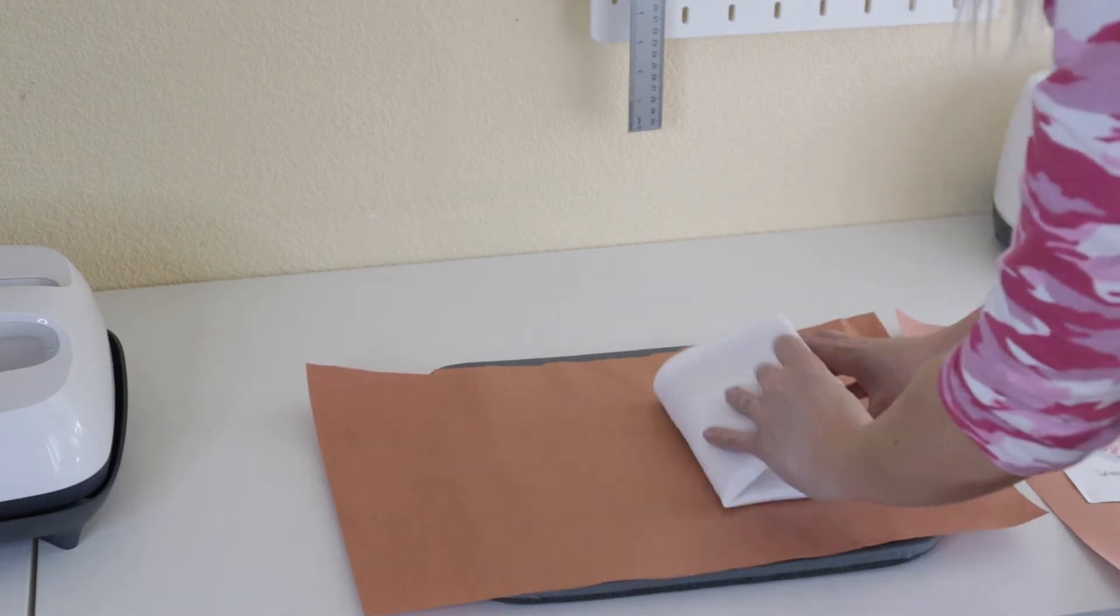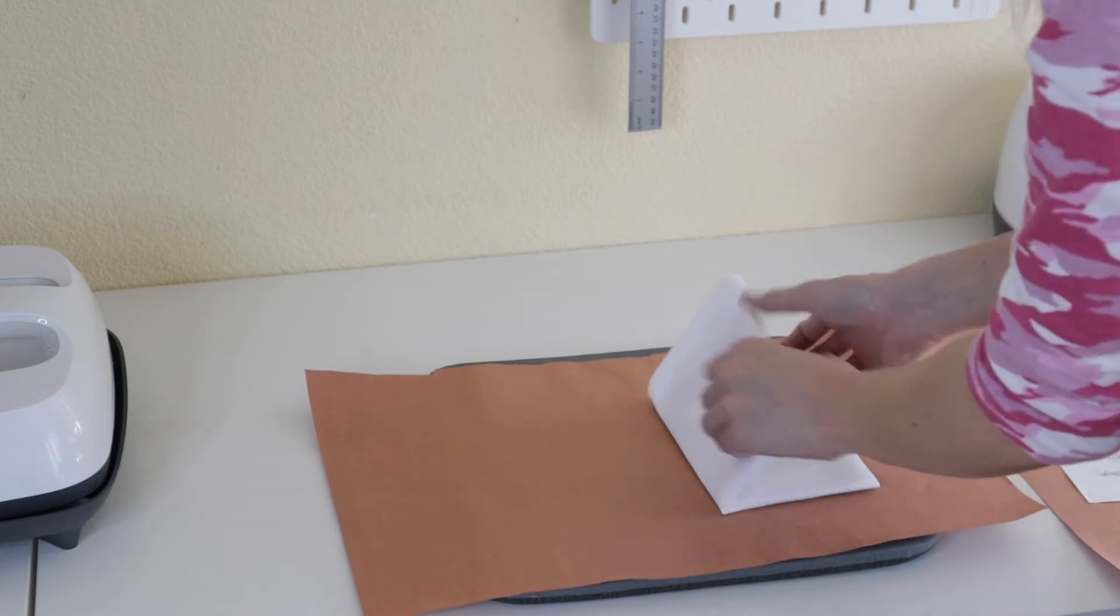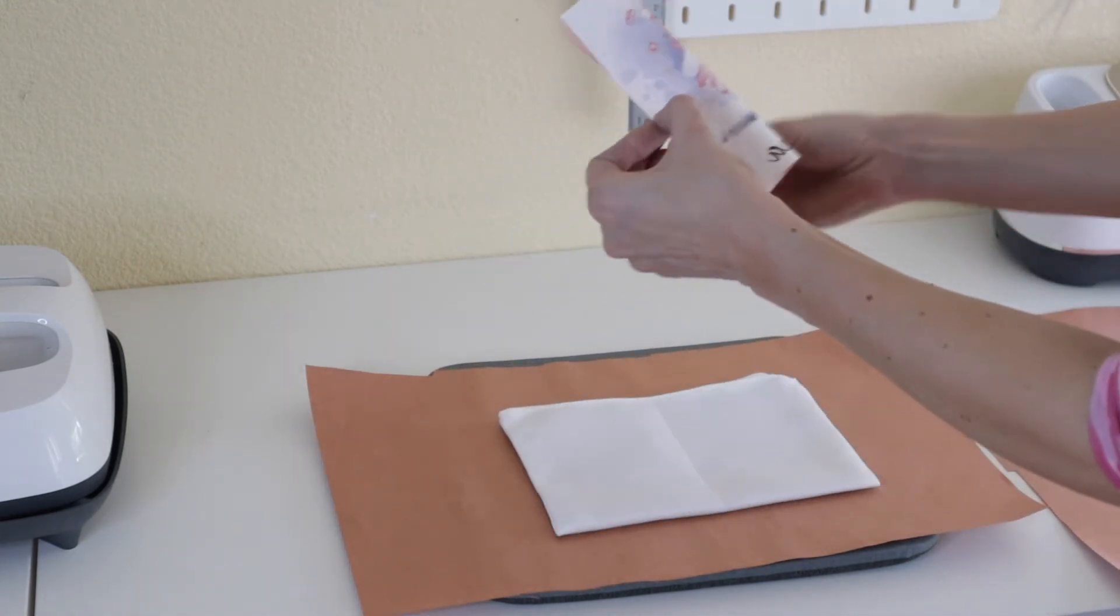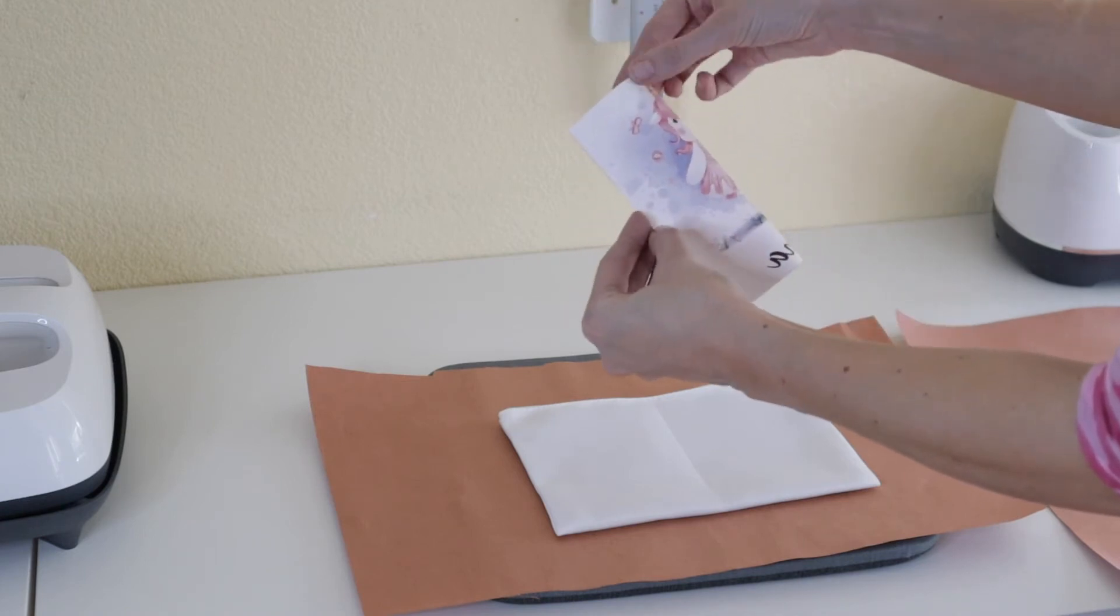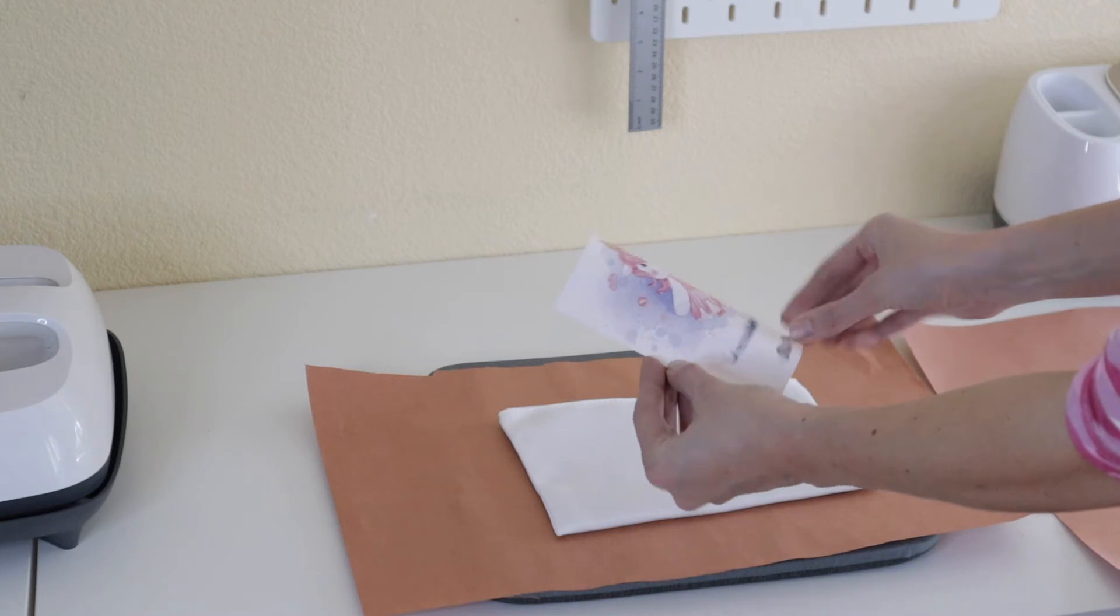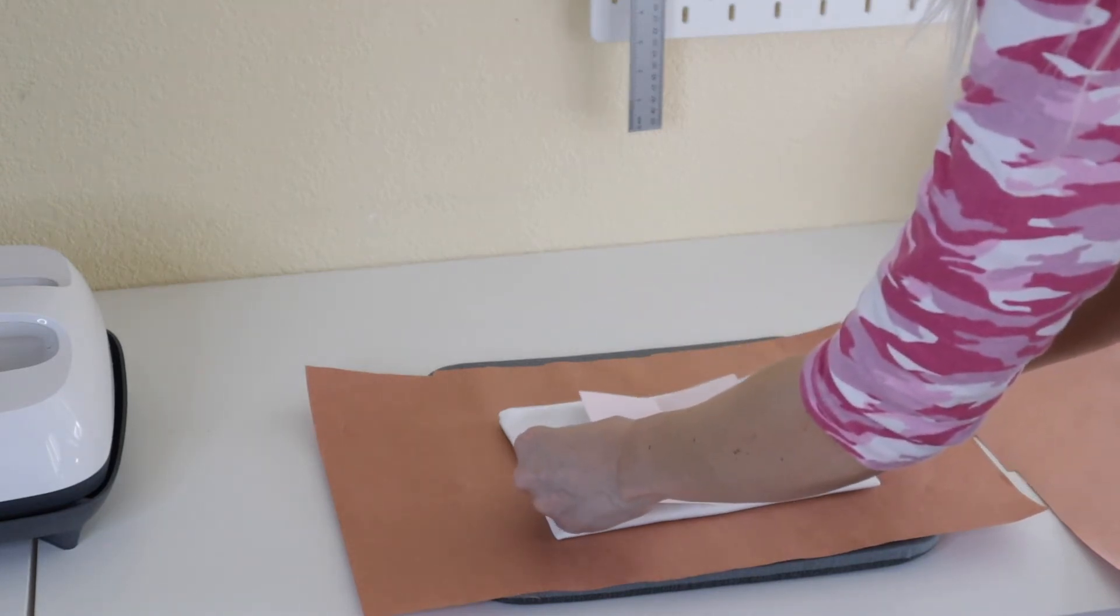Now I'm just gonna go ahead and fold this in half so I could find the center and then I'm gonna fold my image in half. Just make a little crease mark and then I'm ready to just go ahead and tape this down.